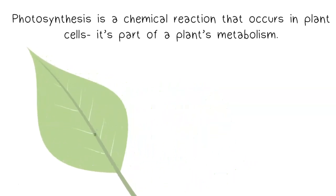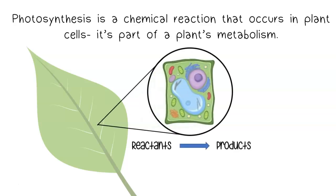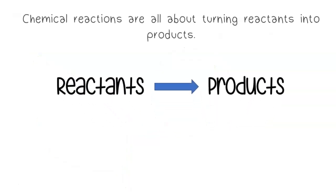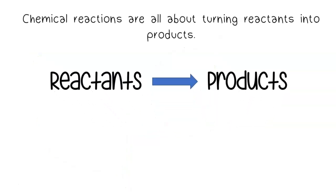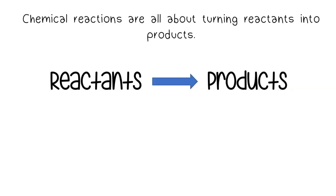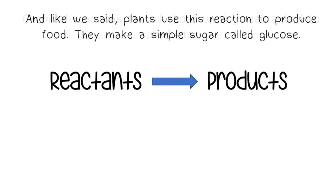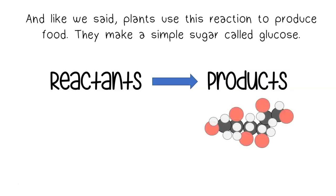Photosynthesis is a chemical reaction that occurs in plant cells. It's part of a plant's metabolism. Chemical reactions are all about turning reactants into products. Plants use this reaction to produce food — they make a simple sugar called glucose.